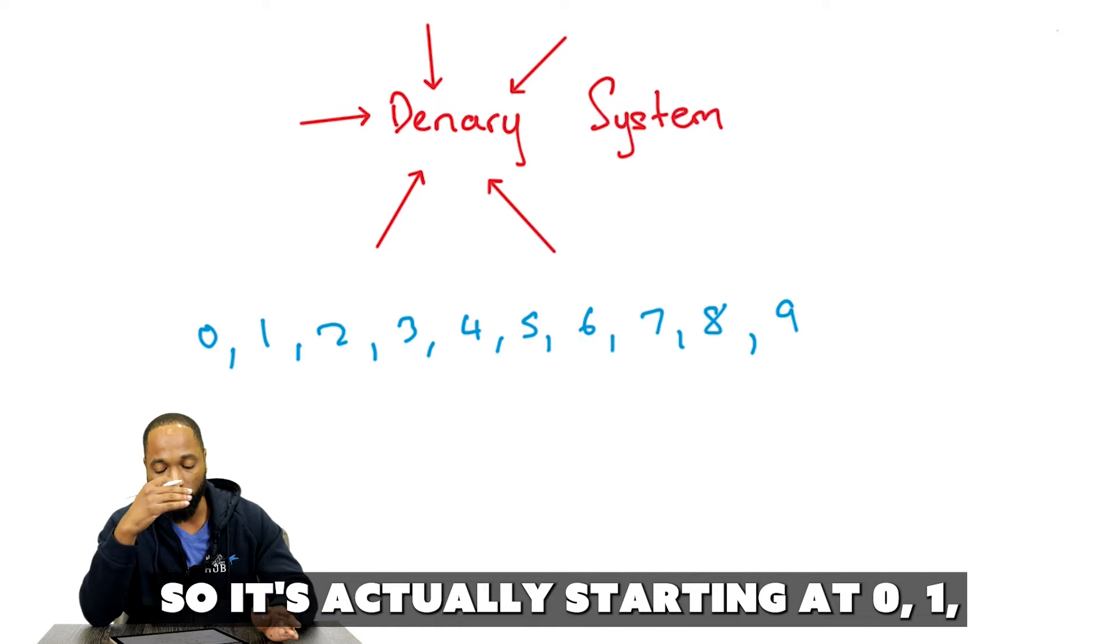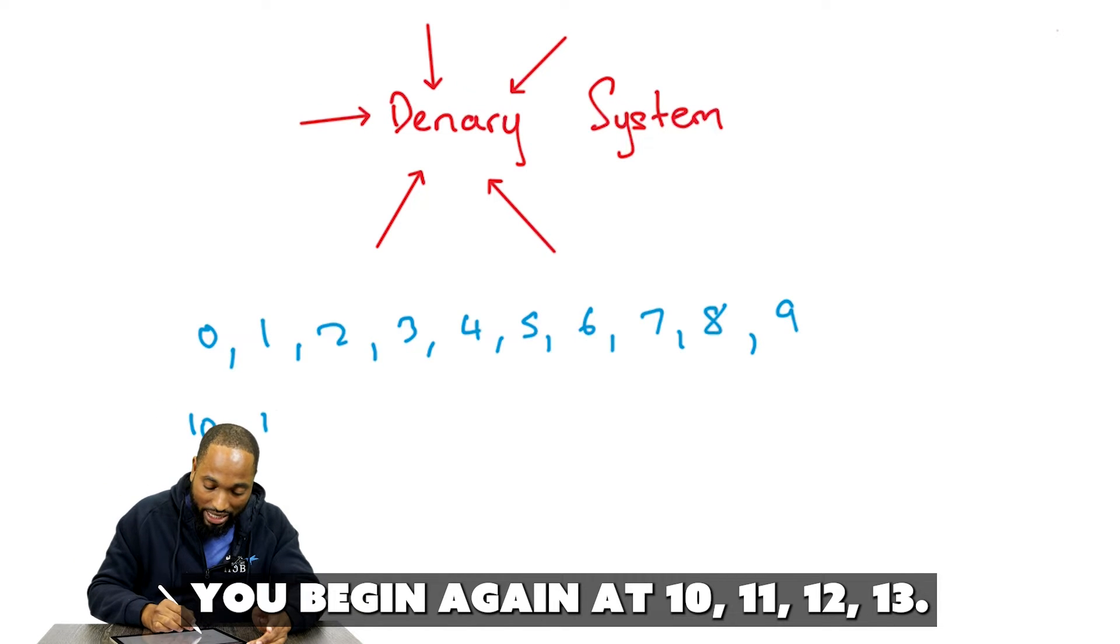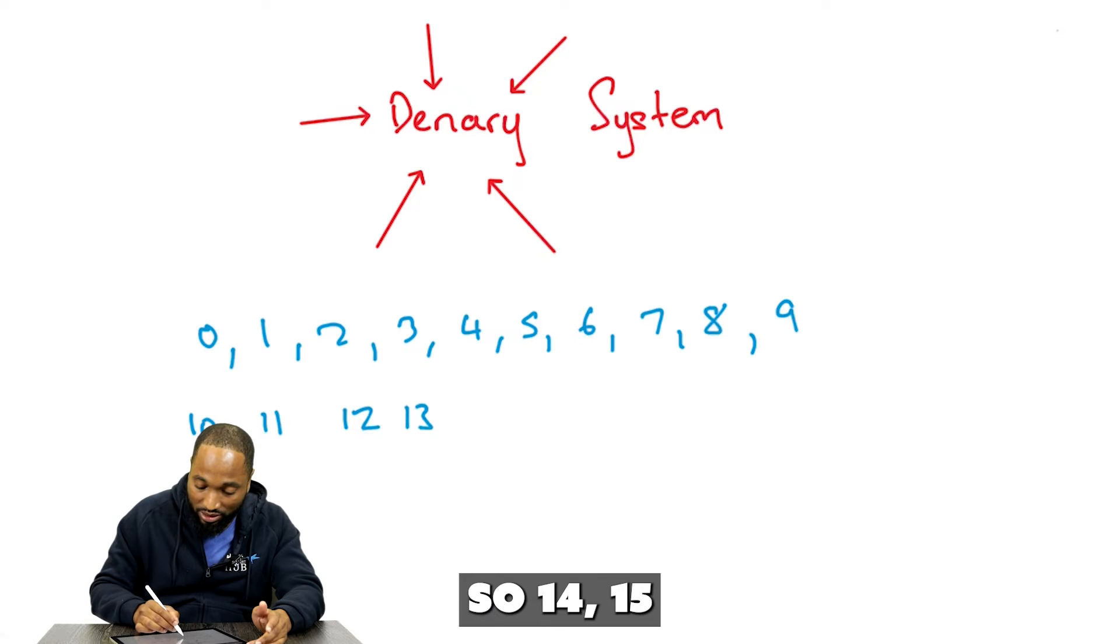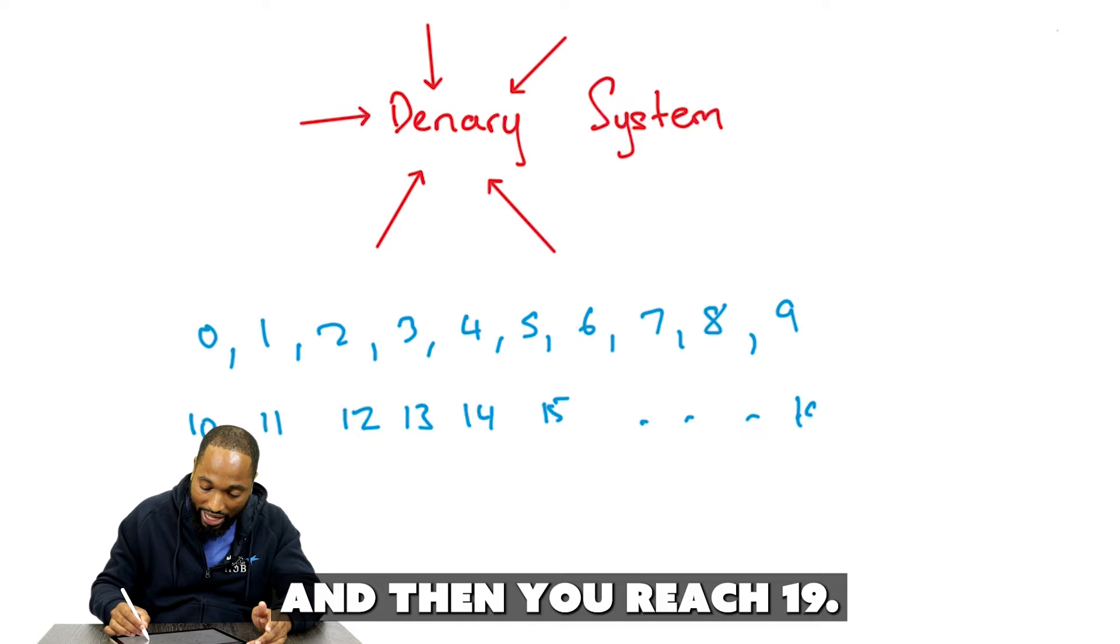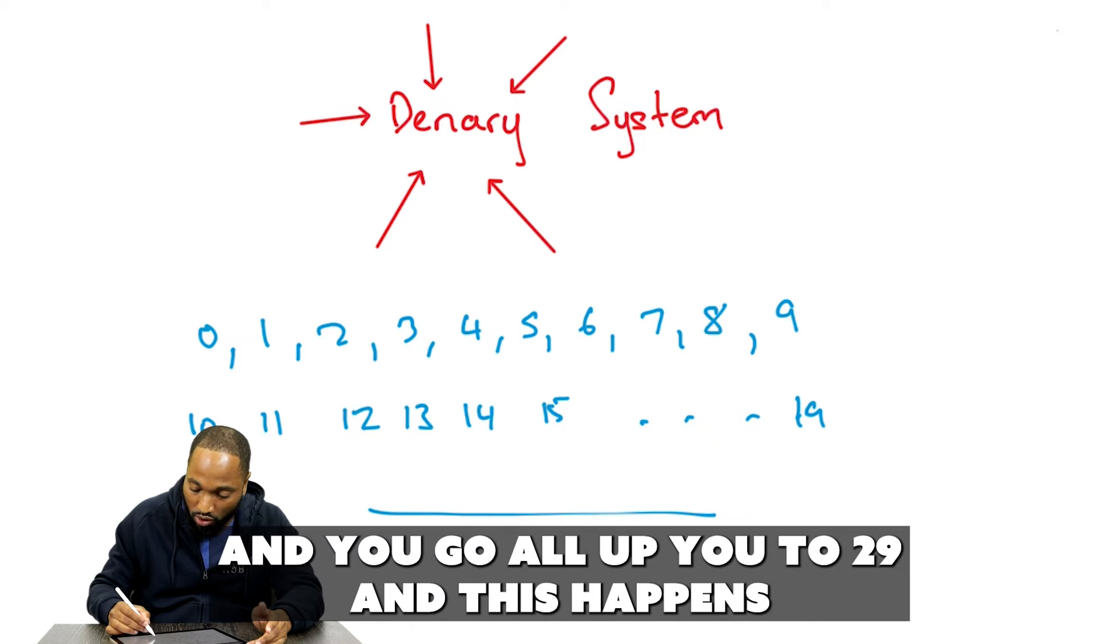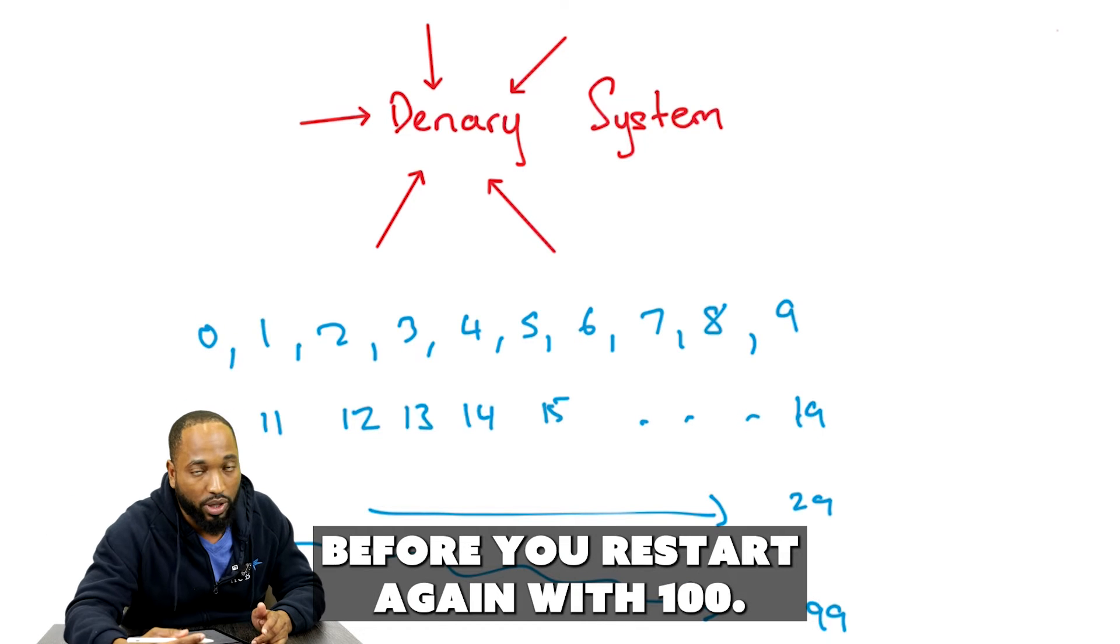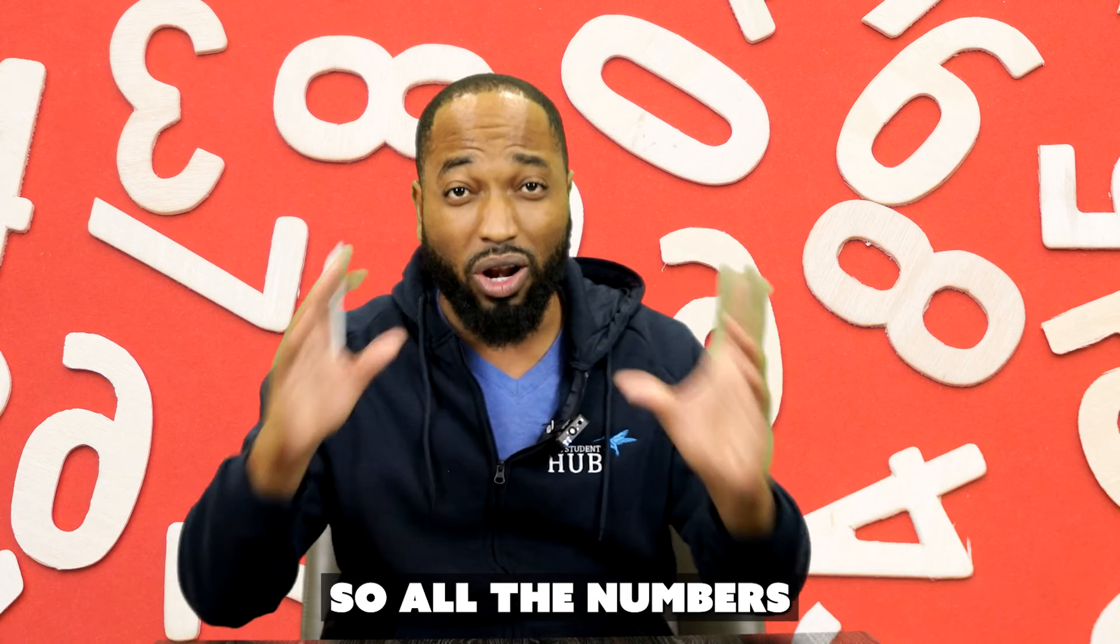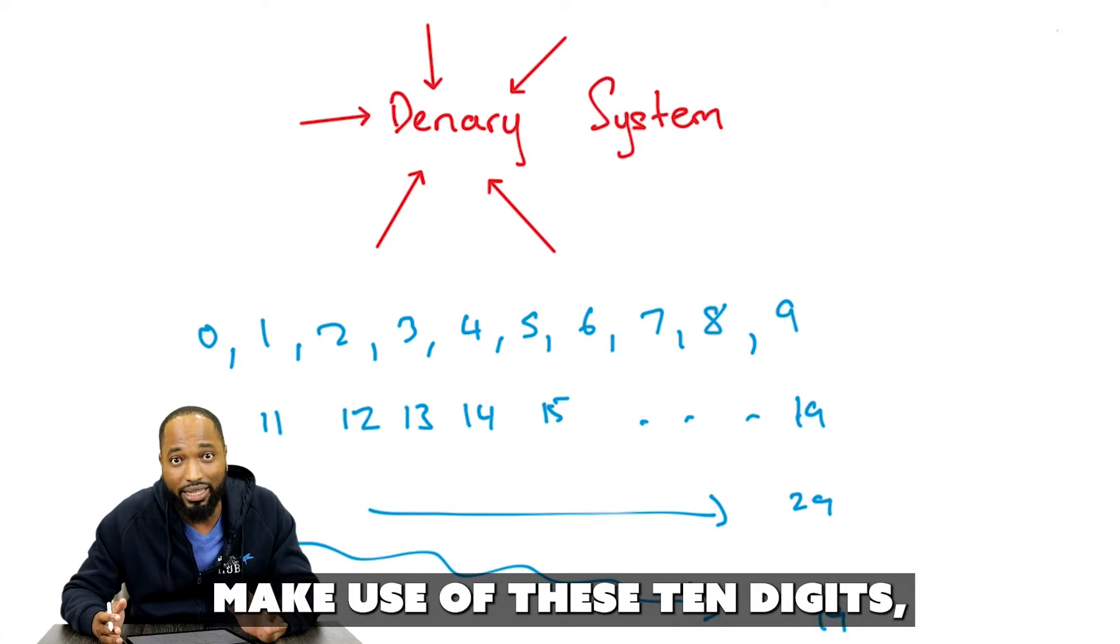So, it's actually starting at 0, 1, 2, 3, 4, 5, 6, 7, 8, 9. Then you begin again at 10, 11, 12, 13, 14, 15, going along the road like that. And then you reach 19. Then you begin again at 20. And you go all the way up to 29. And this happens all the way down to 99. Before you restart again with the 100.